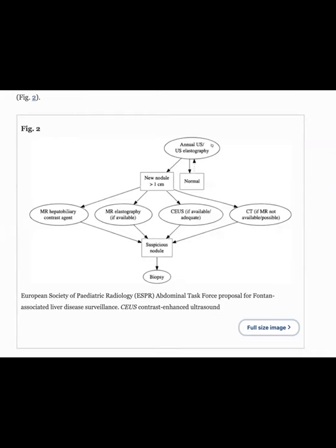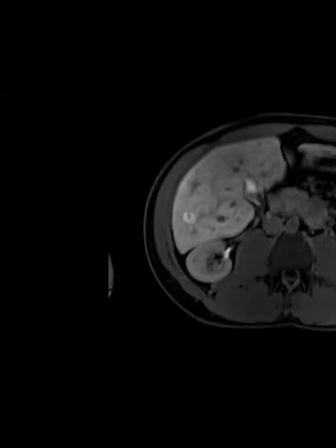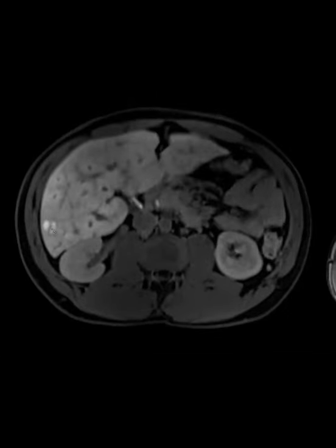They recommend annual ultrasound for pediatric Fontan patients until age 18. If a new nodule is found, they recommend going straight to a hepatobiliary agent like EOVIST, plus elastography to assess fibrosis. High fibrosis could prompt transplant consideration. Contrast-enhanced ultrasound if available, and suspicious nodules should be biopsied. We'll follow ours with EOVIST — growth is less suspicious than washout and restricted diffusion. Also, reminder: don't use LI-RADS for these lesions or any perfusion abnormalities.